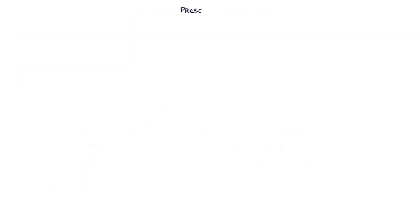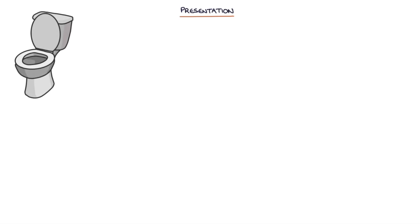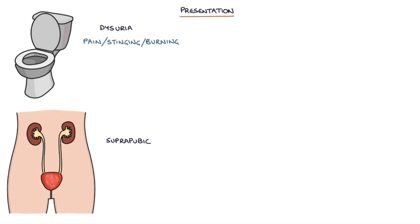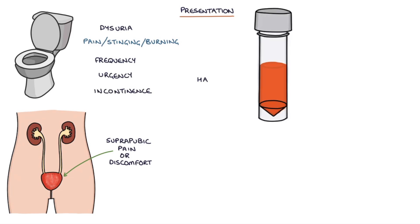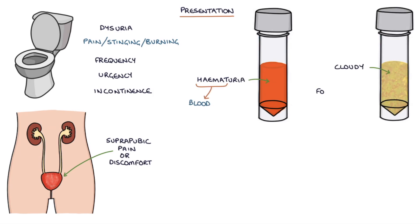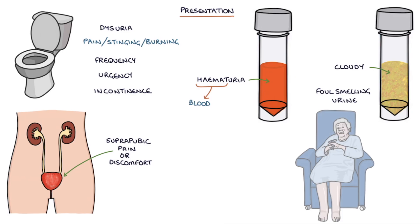A typical lower urinary tract infection presents with dysuria, which is pain, stinging or burning when passing urine; suprapubic pain or discomfort; urinary frequency; urinary urgency; incontinence of urine; hematuria, which is blood in the urine; cloudy or foul-smelling urine; and confusion, which is commonly the only symptom in older or frail patients.